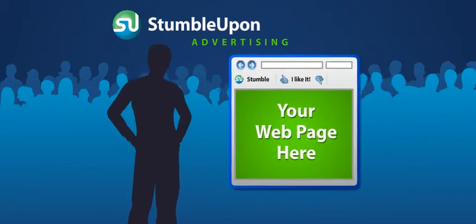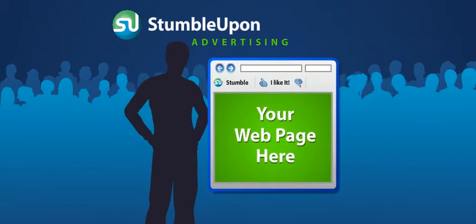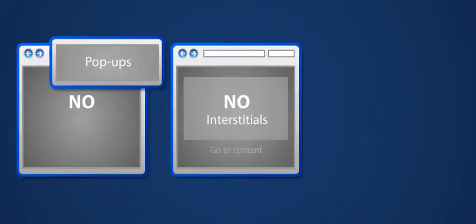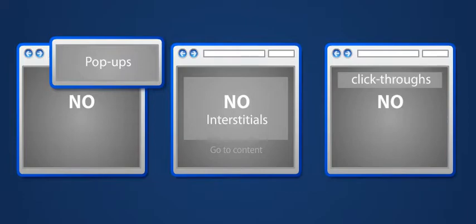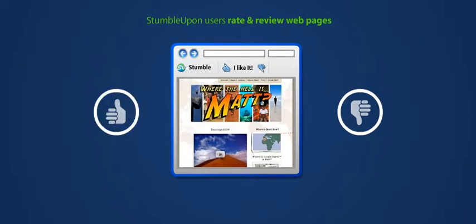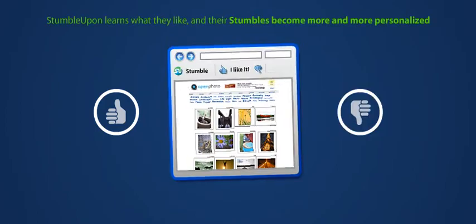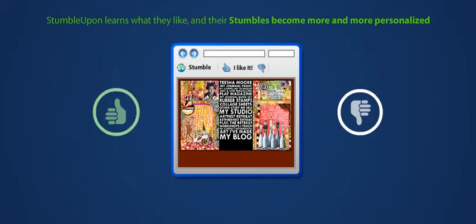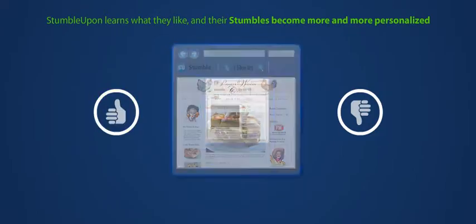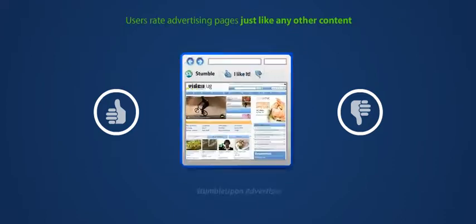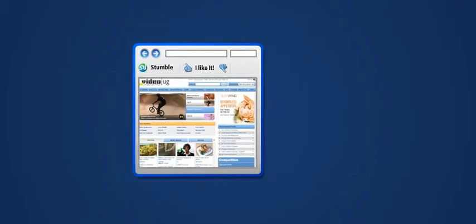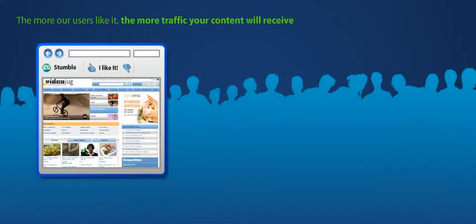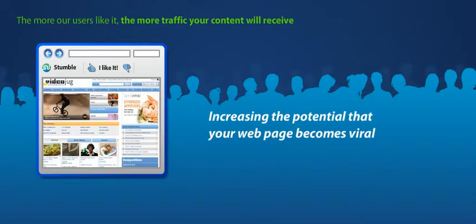StumbleUpon brings the audience directly to your webpage. Unlike traditional online advertising, with StumbleUpon Advertising there are no pop-ups, interstitials, or click-throughs. StumbleUpon users rate and review webpages as they stumble, so that StumbleUpon learns what they like and their stumbles become more and more personalized. Users rate advertising pages just like any other content. The more our users like it, the more traffic your content will receive, increasing the potential that your webpage becomes viral.